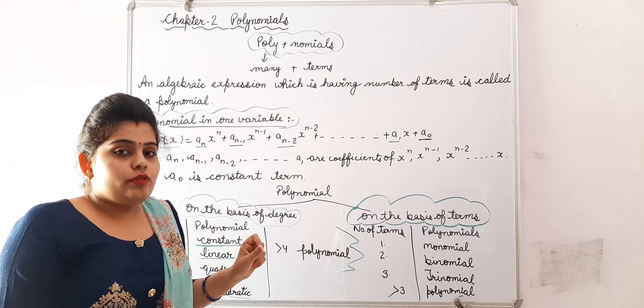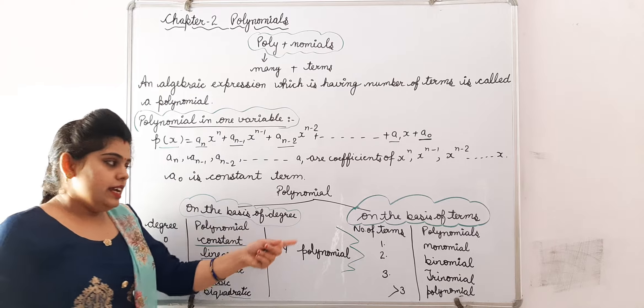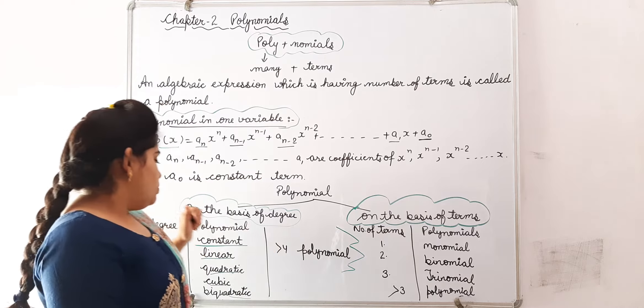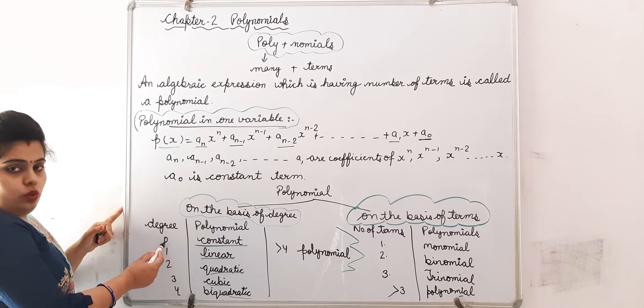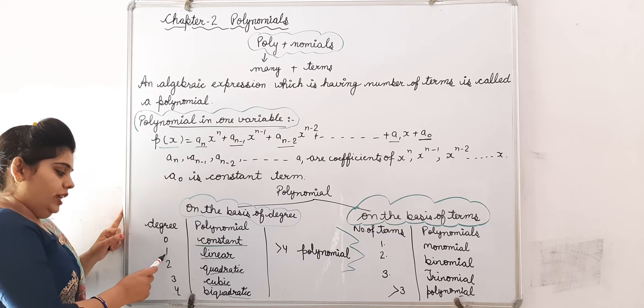Now we can classify polynomial on two bases. First is on the basis of degree, second is on the basis of terms. If degree is 0, then it is called constant polynomial. If degree is 1, it is called linear polynomial.